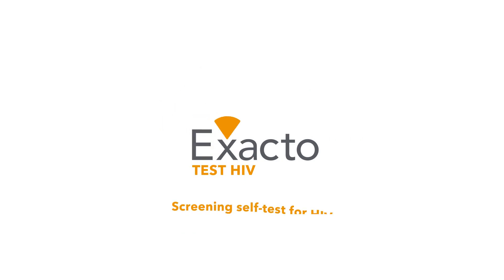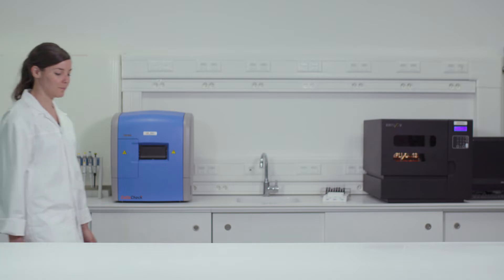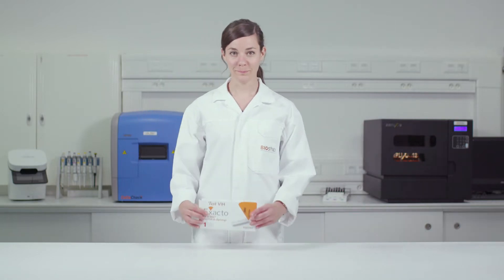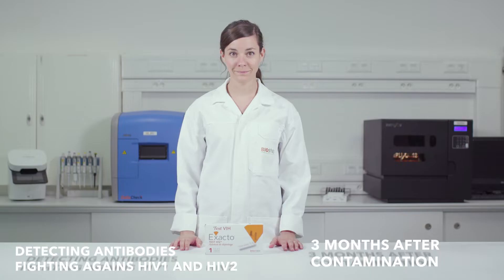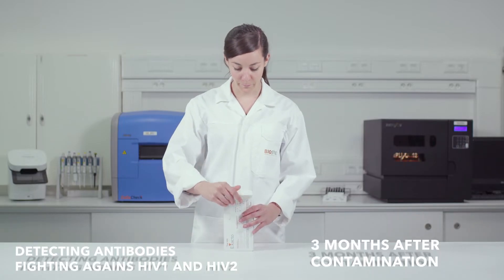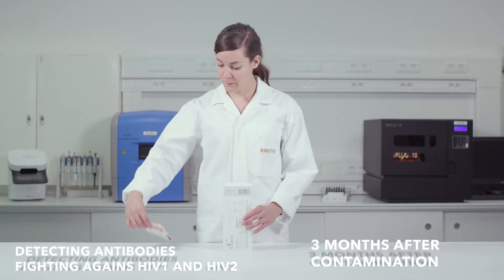Exacto Test HIV is a self-screening test for HIV, the virus responsible for AIDS. This test, with a 99.9% accuracy, consists of antigens and is capable of detecting antibodies fighting against HIV-1 and HIV-2 three months after contamination.